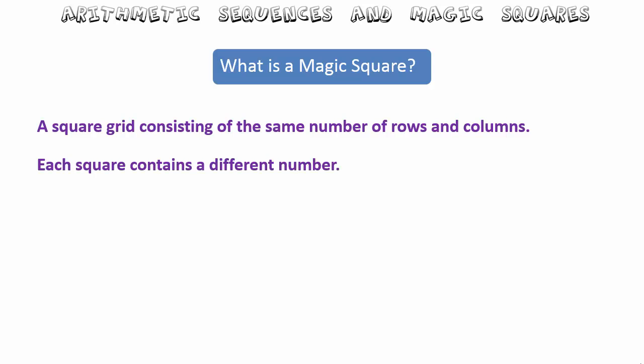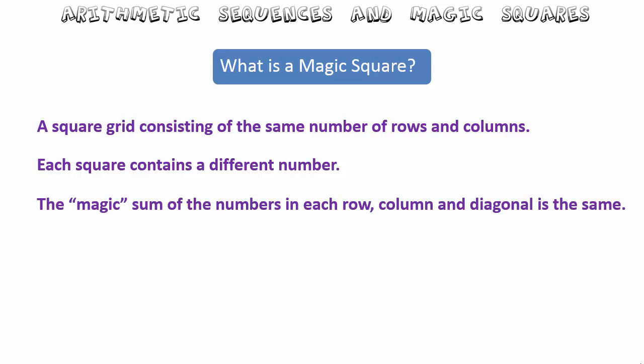Each square in the grid must have a different number — otherwise it would be pretty boring to create a grid with every square containing the number one. The magic sum is what we obtain when we add all the numbers in each row, column and diagonal, and it should come out to be the same if it is to be a magic square.